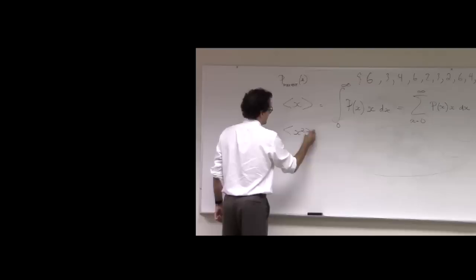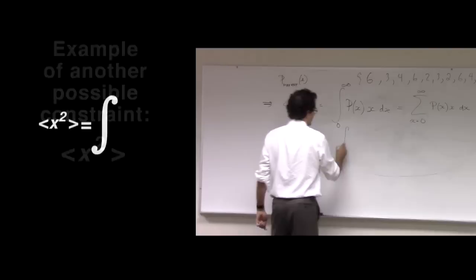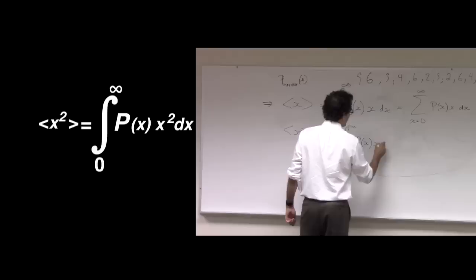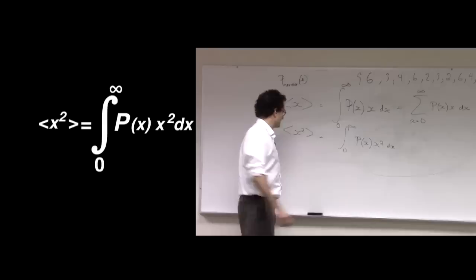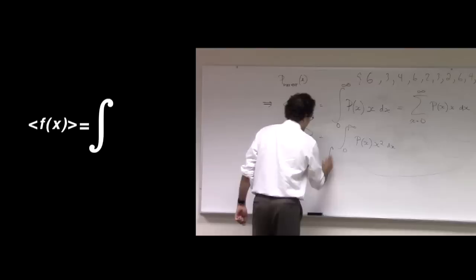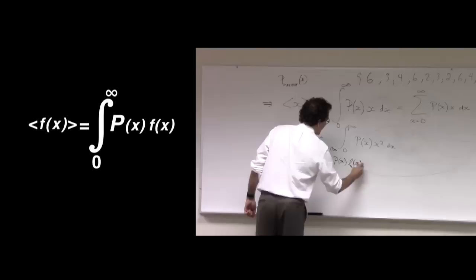And just to give you an example, here's another expectation value you might measure. This is the average of the square of the waiting time. And of course, the way you do that is you integrate X squared dx, weighted by the probability of that particular X.